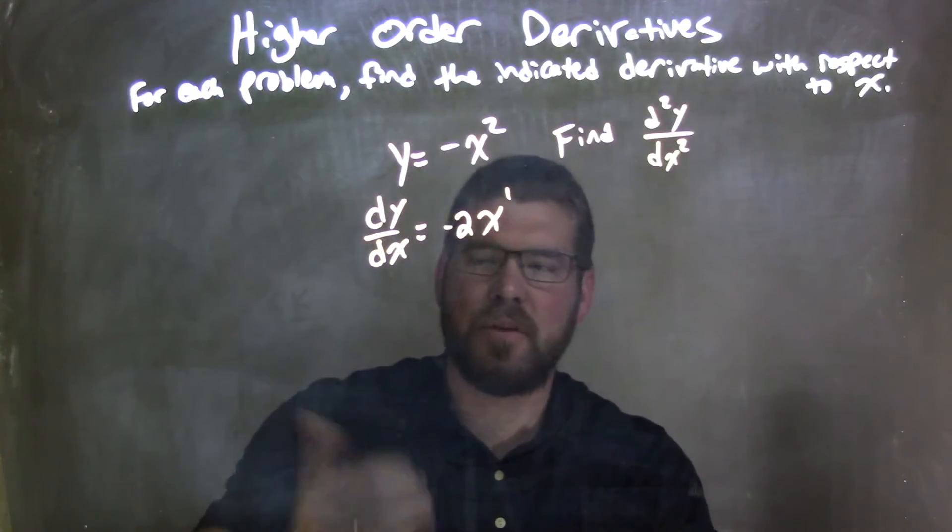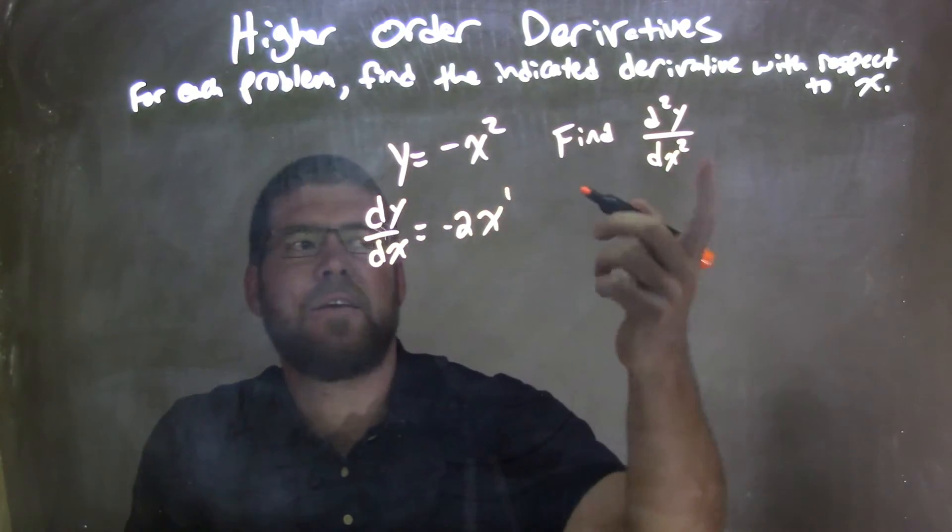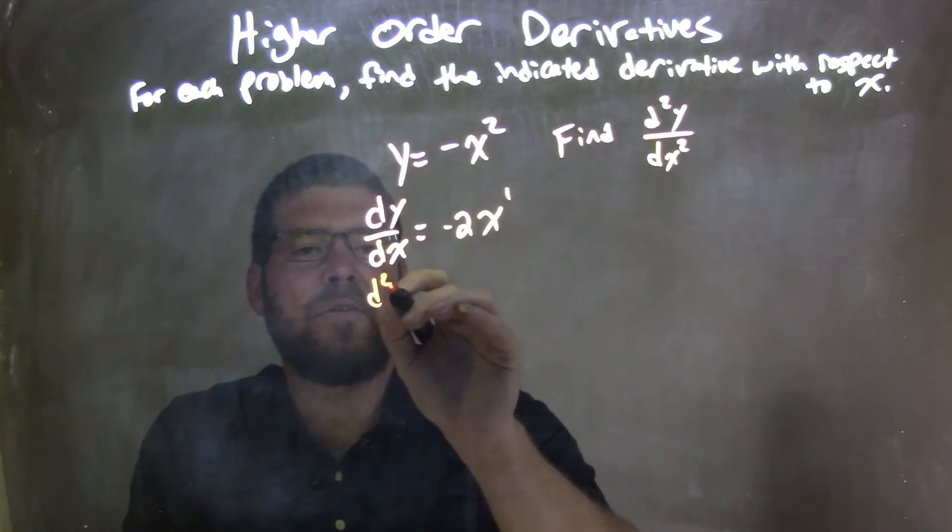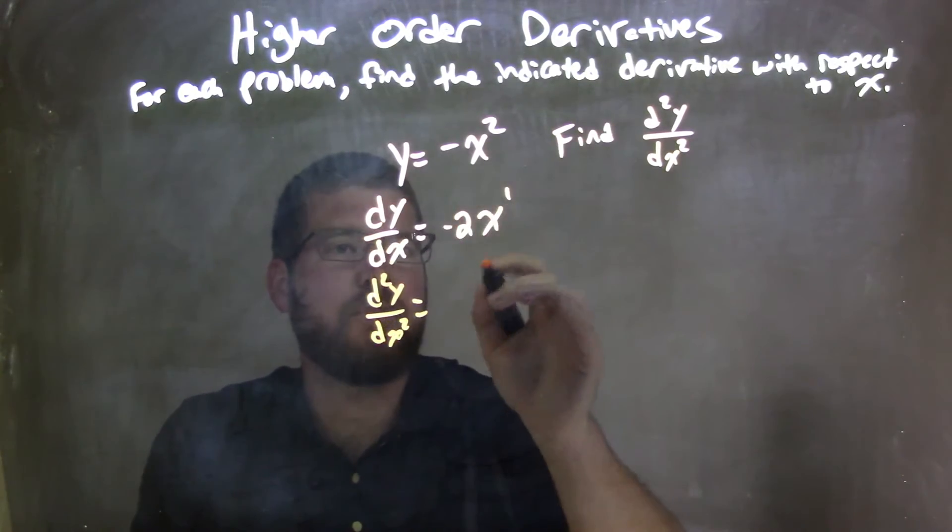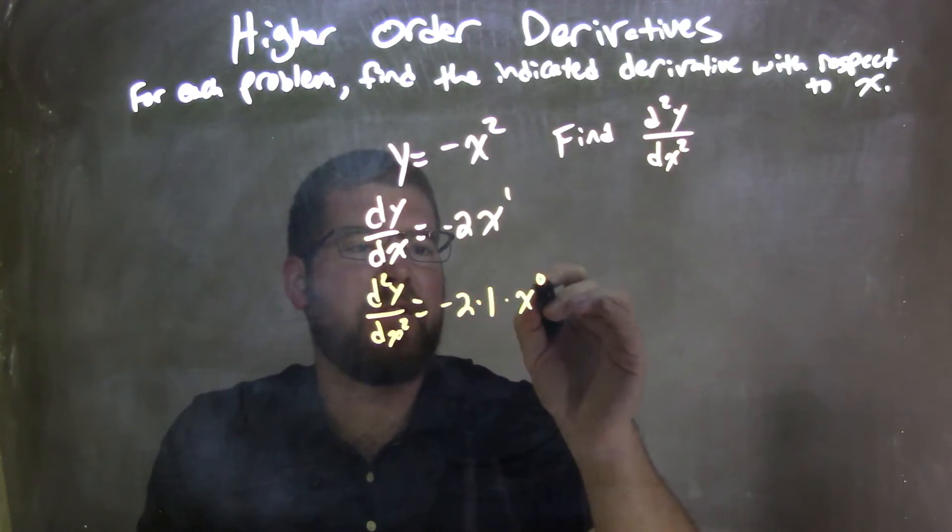Now I have to find the second derivative. So I've got to find d²y/dx². That's equal to—the 1 comes down, so we have negative 2 times that 1 times x to the 0 power.